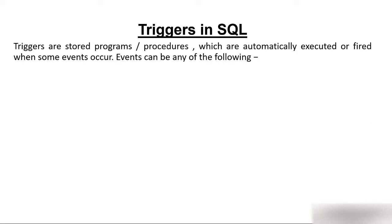Triggers are stored programs or procedures which are automatically executed or fired when some event occurs. A trigger is a stored program or procedure which automatically executes on an occurrence of an event. For example, you generally get short-tempered — the meaning of getting short-tempered is that you are getting triggered — just because some event has happened which you don't like.